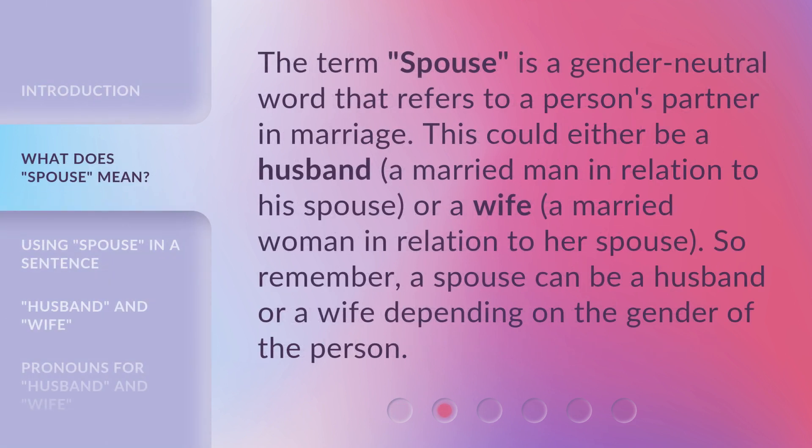The term 'spouse' is a gender-neutral word that refers to a person's partner in marriage. This could either be a husband — a married man in relation to his spouse — or a wife — a married woman in relation to her spouse. So remember, a spouse can be a husband or a wife depending on the gender of the person.